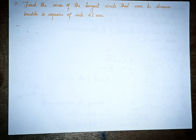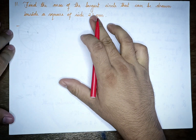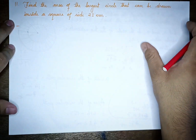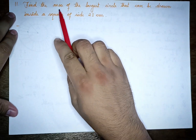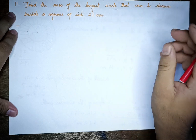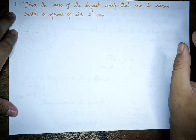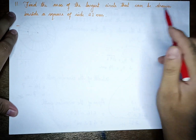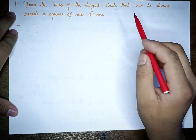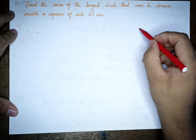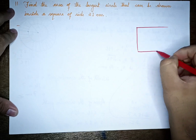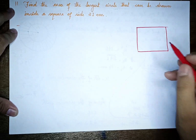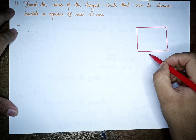The next question is: find the area of the largest circle that can be drawn inside a square of size 21cm.